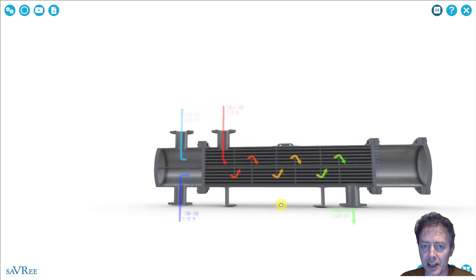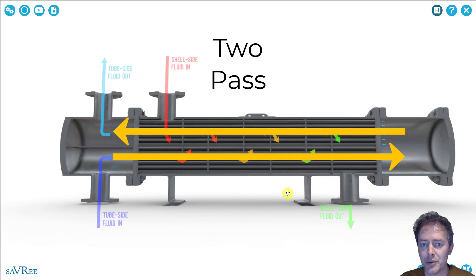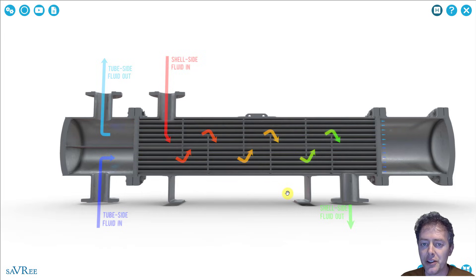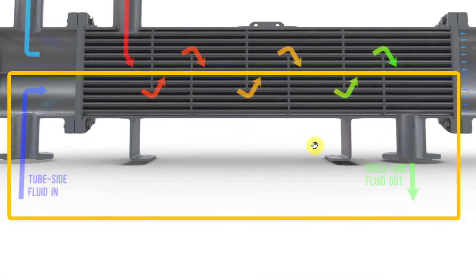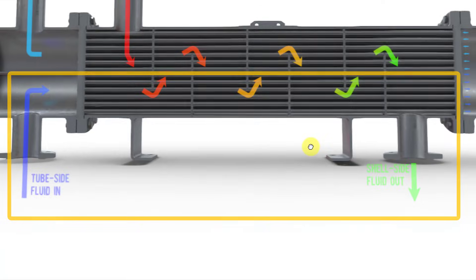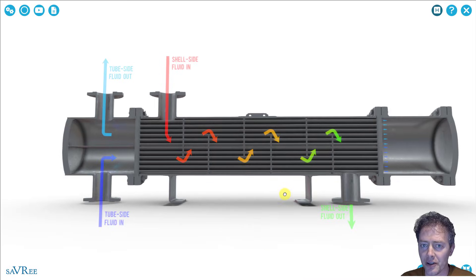This type of heat exchanger is called a two-pass heat exchanger, once again named after how many times the tube side fluid passes through. In our example, the tube side fluid flows left to right and then right to left — that's what makes it a two-pass heat exchanger. In the lower half, the tube side fluid flows in parallel with our shell side fluid, but in the upper half it flows counter to the shell side fluid. We also have some cross flow as the shell side fluid crosses over the tubes several times.